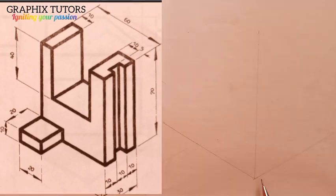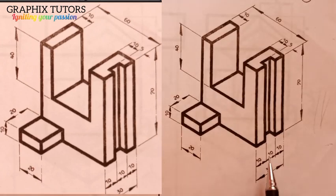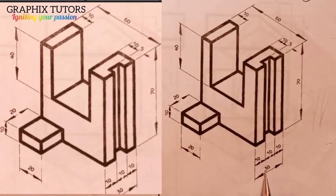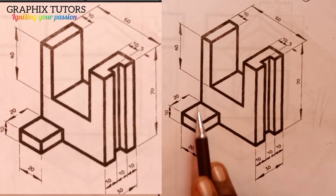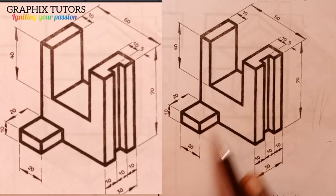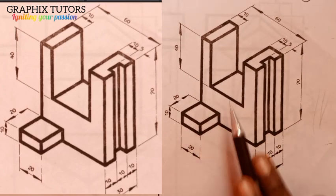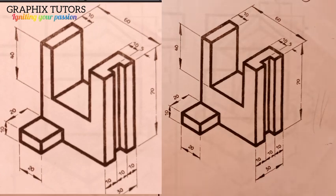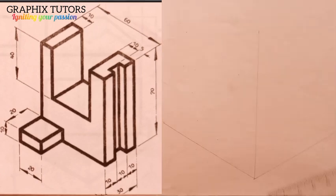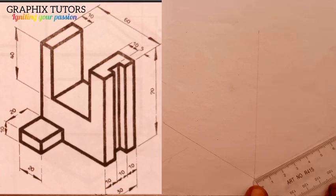Now look for the total length, total width, and total height. The total length here is 30 plus 20 — since they are all in the same direction, 30 plus 20 gives us 50. Now place your meter rule here and start your measurement, measuring 50.